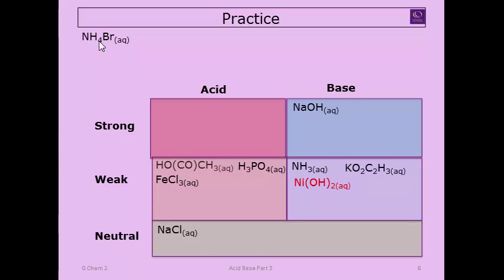Ammonium bromide: ammonium has nitrogen bound to four things — that's weakly acidic. Bromine is in the halide grouping — neutral. So overall this is a weak acid.